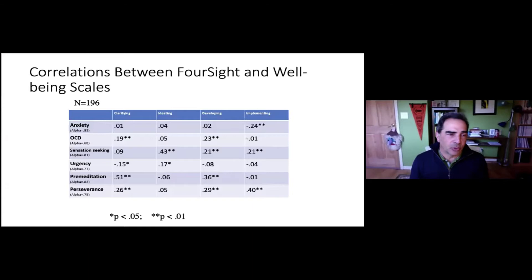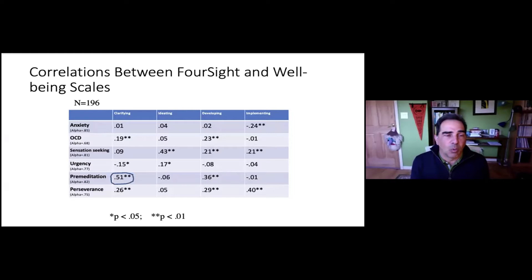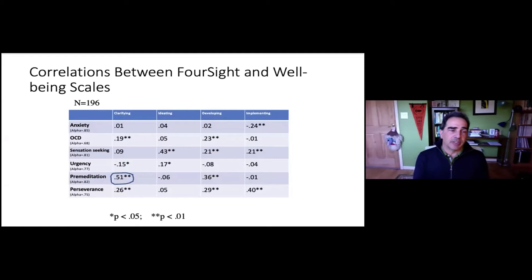This is the correlational table that summarizes the relationship between these six dimensions of well-being and the four foresight preferences. I'm going to highlight in a diagonal fashion one significant relationship for each of the four foresight preferences.